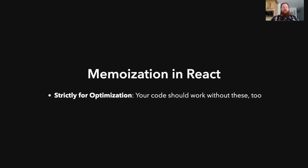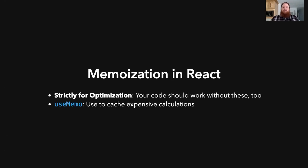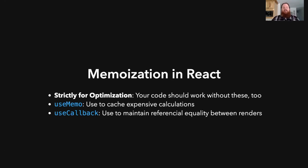There are three ways to handle memoization in React. I'm directly covering two of them and the third will be mentioned when we get there. The first is useMemo, which is specifically used to cache expensive calculations. Then we have useCallback, which is a special case of useMemo used to maintain referential equality on functions specifically.